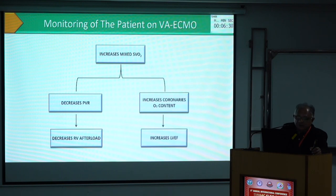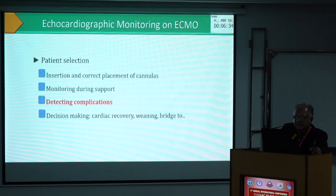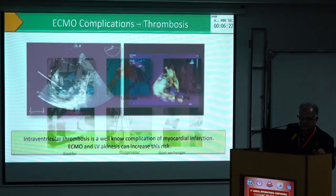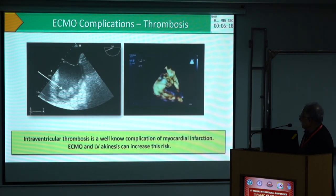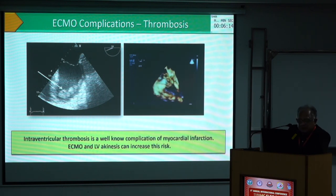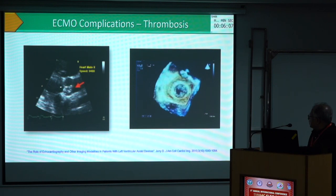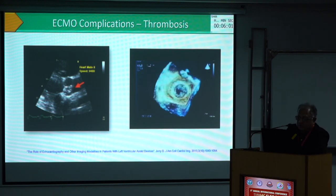One dreaded complication of ECMO can be circuit complications — bleeding, thrombosis, oxygenator failure. Here you can see an IVC thrombus. In 3D you can also see a thrombus on the long axis of the aorta — there is an aortic clot — and on short axis you can again see thrombus over the aortic valve.